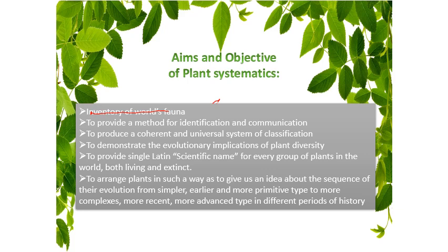Plant systematic also helps us to arrange plants — some species are closely related to each other, so such species are placed in a higher group; similarly, closely related higher groups are placed in still higher groups. We have different taxonomical hierarchies based on different taxa from kingdom to species. In addition, plant systematic helps in documentation, which includes the preservation of living or fossil flora in herbaria. Overall, plant systematic helps us in taxonomic concepts of plant groups or taxa and the evolutionary sequence of plant characters.